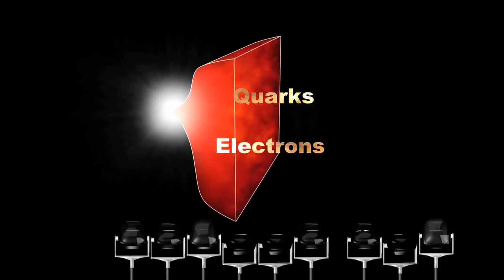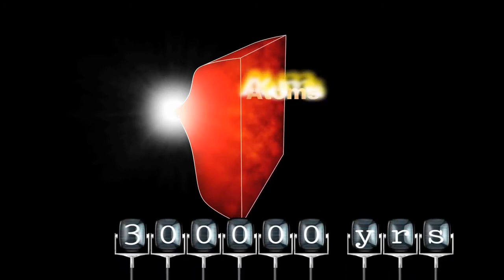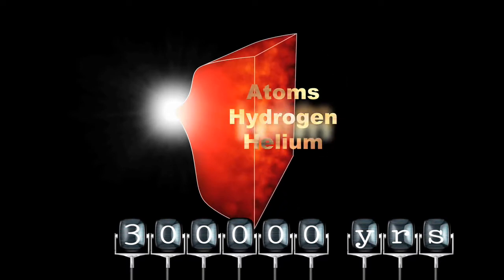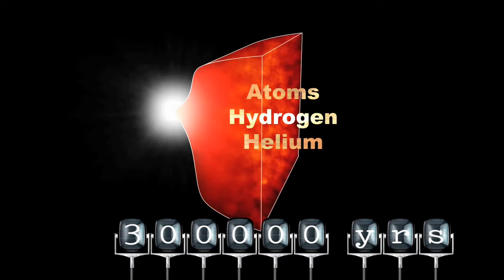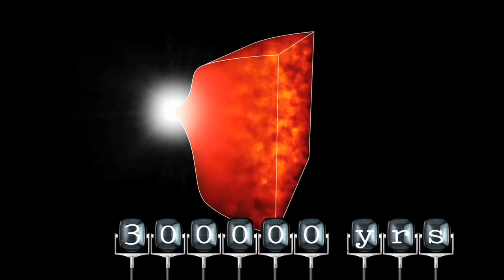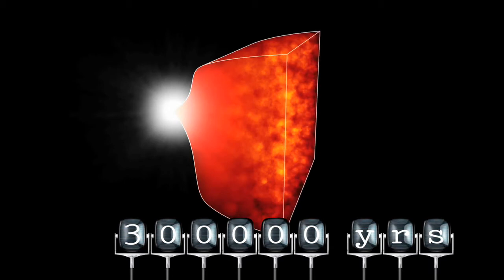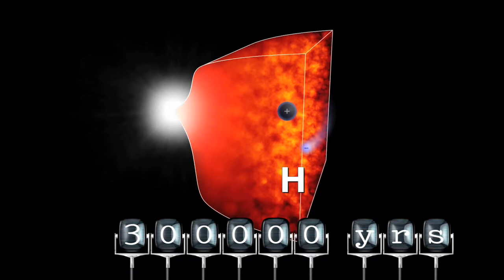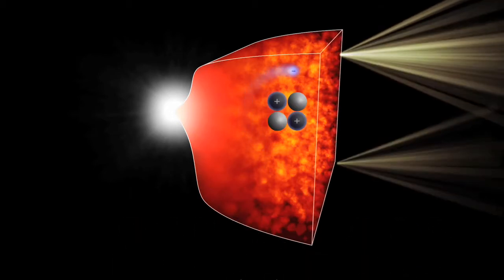After about 300,000 years, the first atoms formed: hydrogen and helium. Initially, these atoms were ionized. Photons were continually scattered by the free electrons and trapped inside the plasma. Further expansion cooled the plasma, enabling atoms to capture and bind electrons. At this time, the universe became transparent.